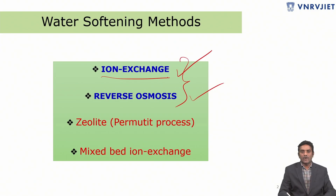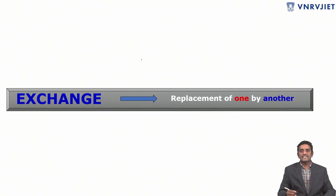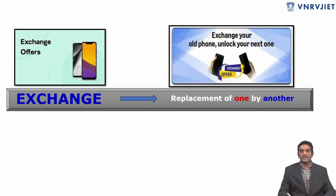Let us discuss about the ion exchange method in detail. Before entering this topic, let me ask: what is exchange? Exchange means replacement of one by another. We hear this word frequently, mostly with mobile phones — they release offers where by giving our old mobile, they give a new mobile for a lesser amount. We exchange our mobiles because they are getting damaged or not useful for regular usage.